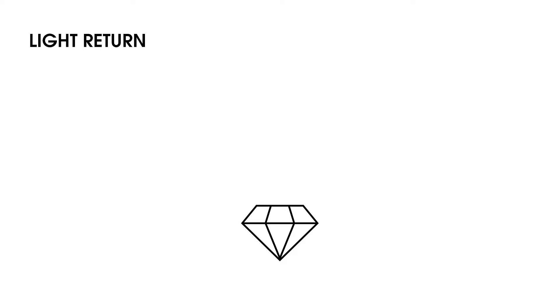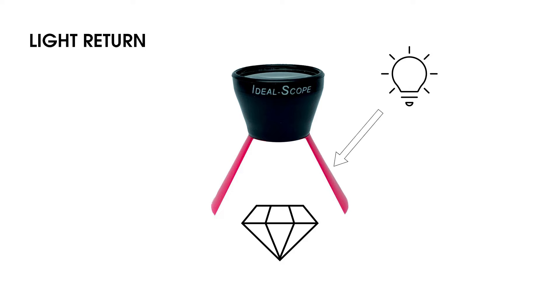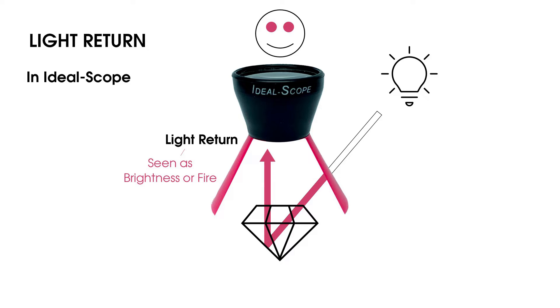When placed over a diamond, light passing through the IdealScope's cone turns red. Light that reflects inside the diamond and travels up is light return, which may be seen as brightness or fire. A viewer looking through the lens will see all light return as red. So in IdealScope analysis, light return is red.